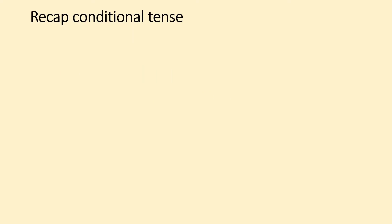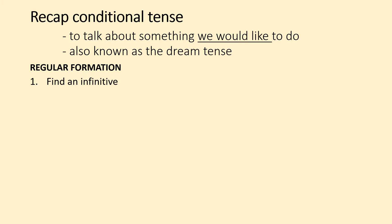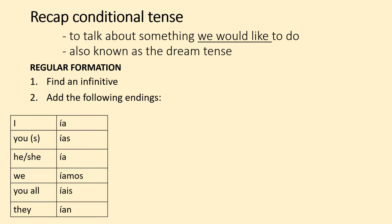That's the end of the adjectives section. Now we're moving on to the conditional tense. Can you remember what it's for? Pause the video if you want to find notes. The conditional tense is when we want to talk about something we would like to do — it's also known as the dream tense because you're wishing and hoping for something. For the regular formation: find an infinitive ending in ar, er, or ir, leave it as it is, and add the endings: ía, ías, ía, íamos, íais, ían.